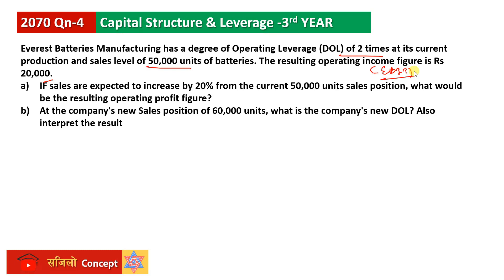If sales are expected to increase by 20%, how does that increase in sales affect operating profit? We will talk about the current production and sales level. The question asks about the effect on operating profit when sales increase by 20%. The company's new sales position will be 60,000 units.